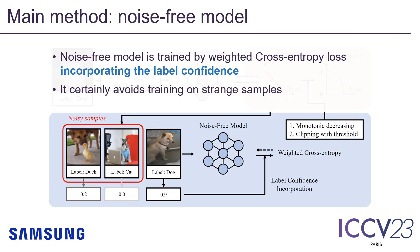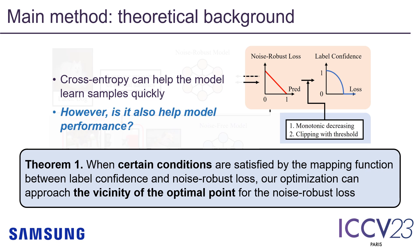The mapping function should decrease monotonically and clip the loss if it is sufficiently low. After the label confidence is derived, we simply multiply it into the sample-wise cross-entropy loss. If the label confidence can decrease the noise ratio, this model can be trained on an easier dataset. The noise-free model also guides the noise-robust model by distilling its knowledge. We know that cross-entropy can help the model learn samples quickly.